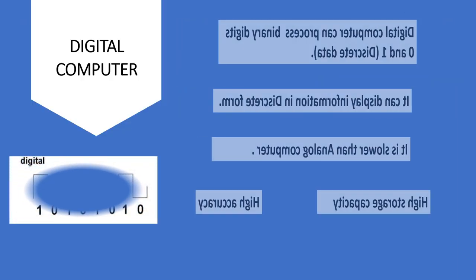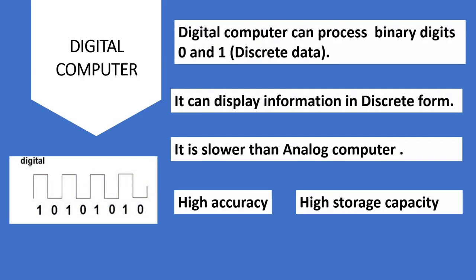A digital computer can process binary digits 0 and 1. It can display information in discrete form. It is slower than an analog computer. It has high accuracy and high storage capacity.